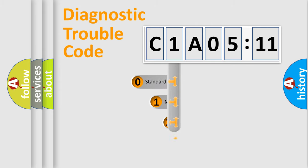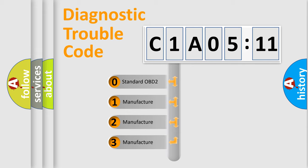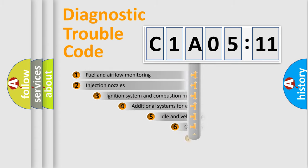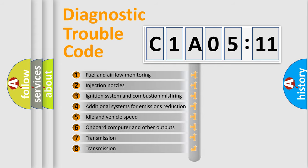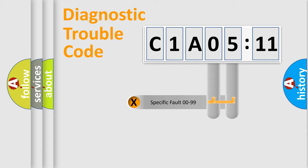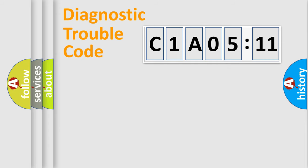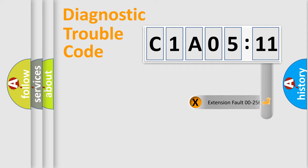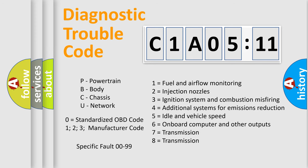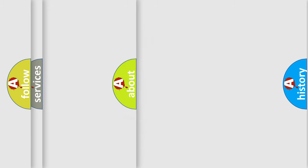This distribution is defined in the first character of the code. If the second character is expressed as zero, it is a standardized error. In the case of numbers 1, 2, or 3, it is a more specific expression of a car-specific error. The third character specifies a subset of errors. This distribution is valid only for the standardized DTC code. Only the last two characters define the specific fault of the group. The add-on to the error code serves to specify the status in more detail — for example, a short to ground. Such a division is valid only if the second character code is expressed by the number zero.